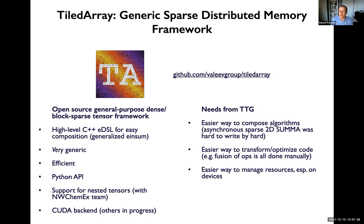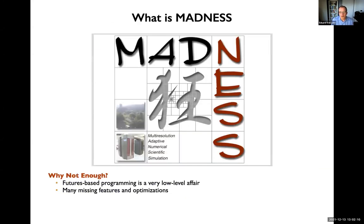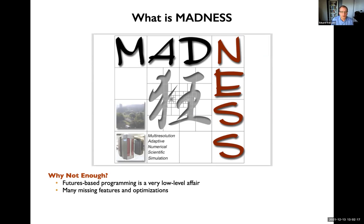What we really needed TTG for was an easier way to compose algorithms — composing applications using that runtime is difficult, and the same is true for similar runtimes like HPX and UPC++. Composing algorithms at the level of futures is difficult. We also need an easier way to transform optimized code, manage resources on devices, and avoid extra copies and memory allocations. Futures-based programming is a very low-level affair, similar to DTD in Parsec, and there are many missing features and optimization opportunities. So enter TTG.